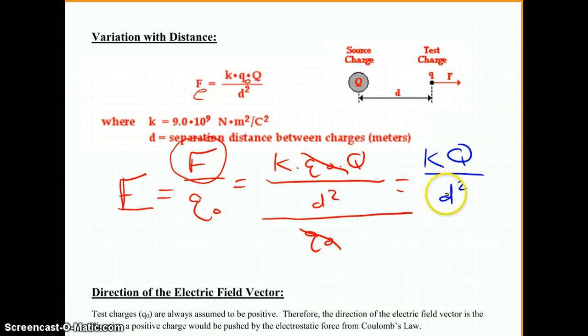So, because it is a distance squared, this is again another example of an inverse square relationship. So, if you double the distance you are from a source charge, so, say at this point we have a force of f, if I go twice as far away, two times the distance, then my force, and therefore my electric field strength, will be one quarter of what it was before, because it's one over two squared, because we doubled the distance.